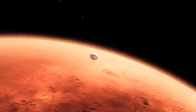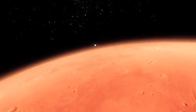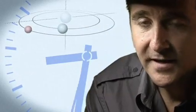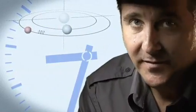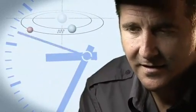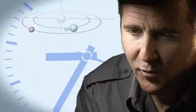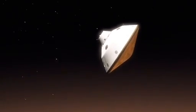From the top of the atmosphere down to the surface, it takes us seven minutes. It takes 14 minutes or so for the signal from the spacecraft to make it to Earth. That's how far Mars is away from us. So when we first get word that we've touched the top of the atmosphere, the vehicle has been alive or dead on the surface for at least seven minutes.